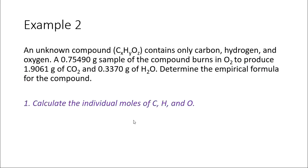Now let's take a look at example two. The unknown compound now has an extra element — oxygen — so it is CxHyOz, containing carbon, hydrogen, and oxygen. We'll first calculate the individual moles of carbon and hydrogen, then convert those moles to mass, and from that we can determine the mass of oxygen. The reason we do oxygen last is that oxygen is in our unknown sample but also in the other reactant, O2, so we use process of elimination to determine the mass of oxygen.